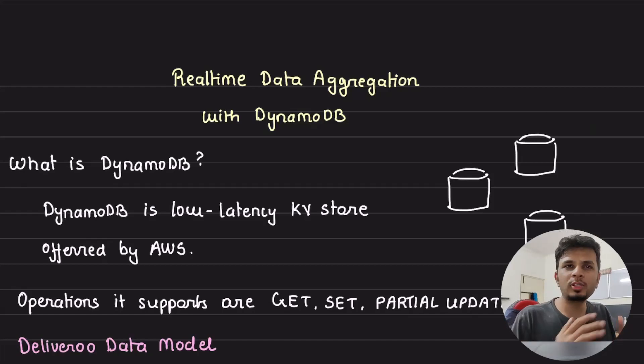DynamoDB is extremely powerful, scalable, and a fast key-value store, but it lacks aggregation. In this video, we design a use case that is very common for food delivery startups like Deliveroo and Swiggy that would require us to do real-time aggregations of DynamoDB data in an extremely cost-efficient way.